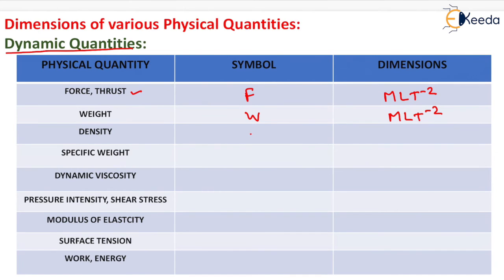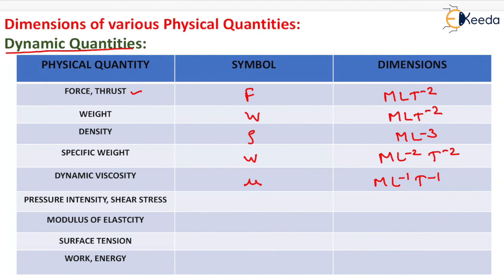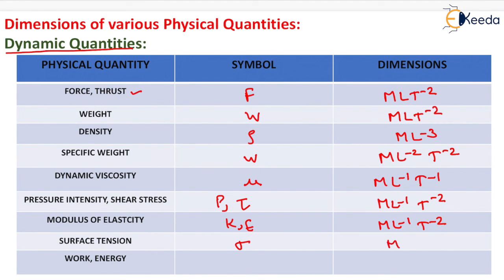For density, symbol ρ (rho), dimension ML⁻³. Specific weight, symbol W, dimension ML⁻²T⁻². Dynamic viscosity, symbol μ (mu), dimension ML⁻¹T⁻¹. Pressure intensity and shear stress, symbol P, dimension ML⁻¹T⁻². Modulus of elasticity, symbol K or E, dimension ML⁻¹T⁻². Surface tension dimension is ML⁻².